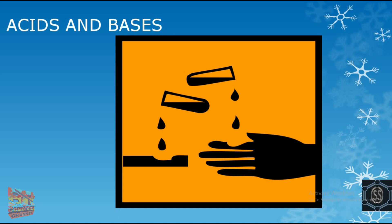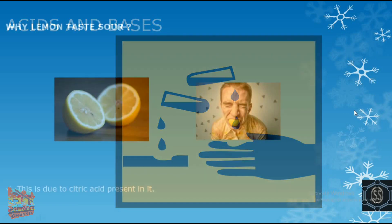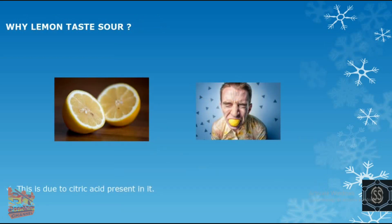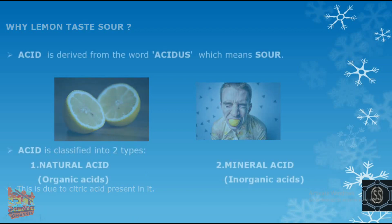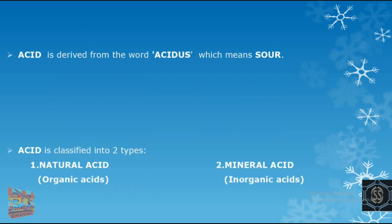In this video we'll study about acids and bases. Have you ever wondered why lemon tastes sour? This is because of citric acid present in it. The word 'acid' is derived from the Latin word 'acidus' which means sour.